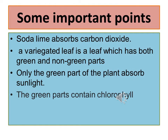Soda lime absorbs carbon dioxide. A variegated leaf is a leaf which has both green and non-green parts. Only the green part of the plant absorbs sunlight, and the green parts contain chlorophyll.